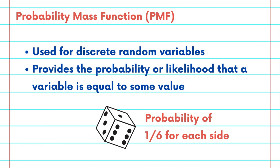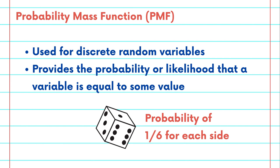For instance, in a fair six-sided die, the PMF would assign a probability of one-sixth to each side.